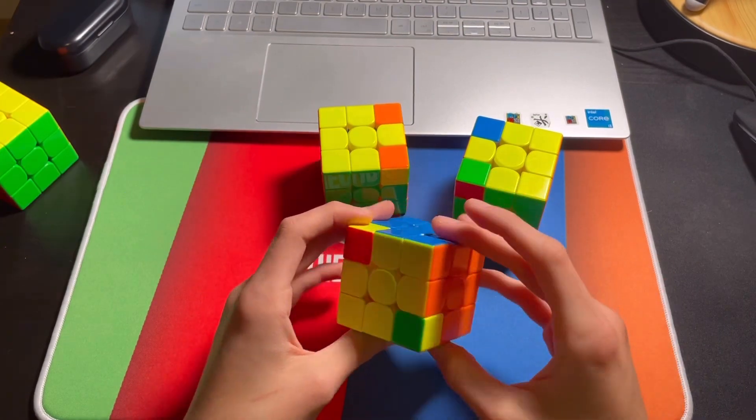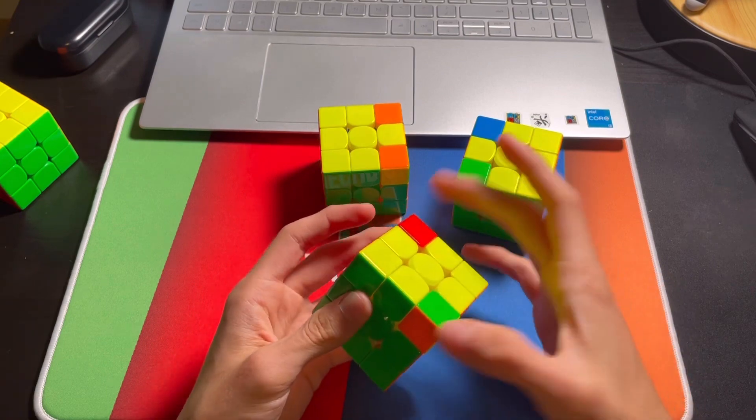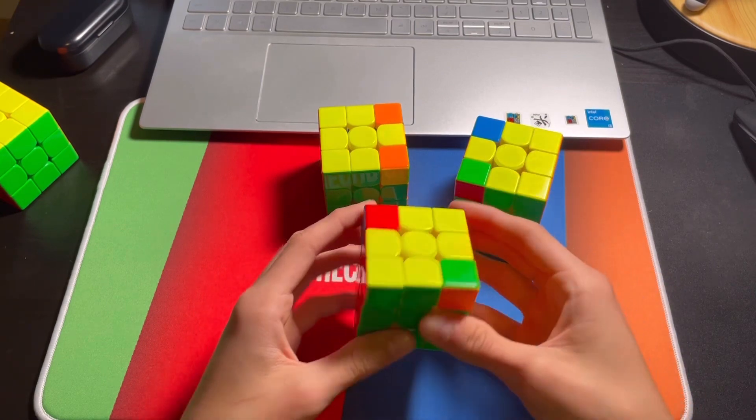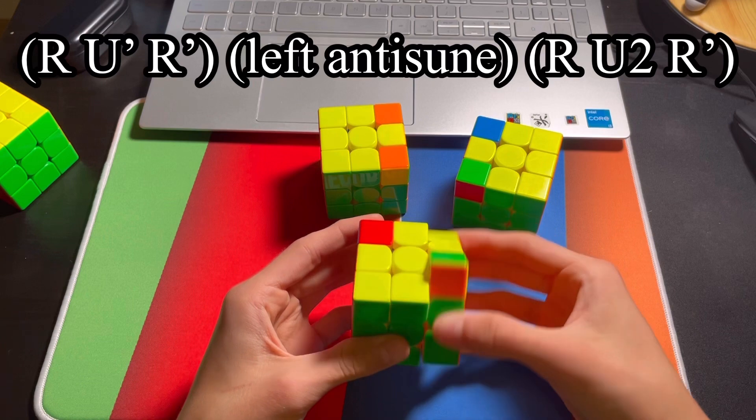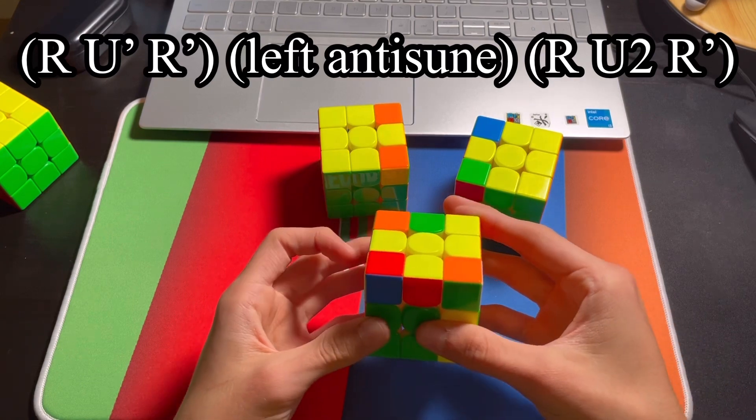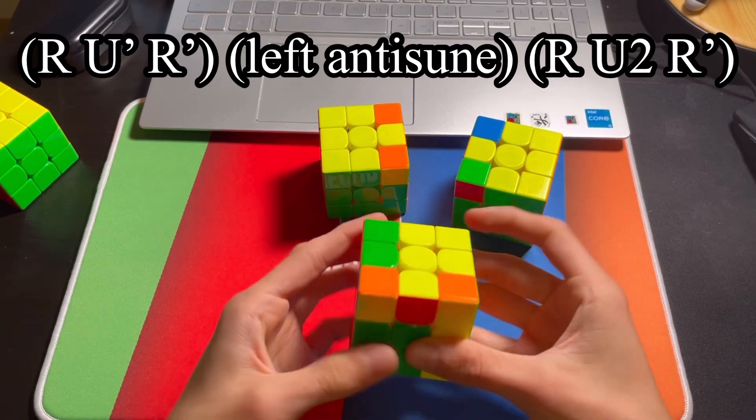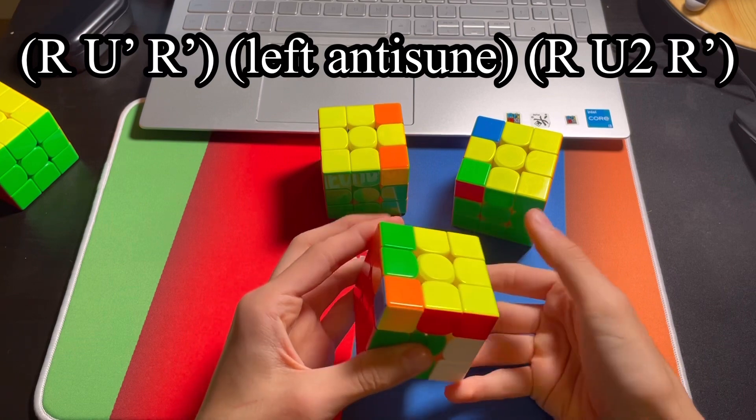The first case would do it from this angle, it looks like a bow tie where everything is solved, except these corners need to be flipped, and we do it from this angle. Take the pair out, lefty anti-sune, and then reinsert the pair with R U2 R'.